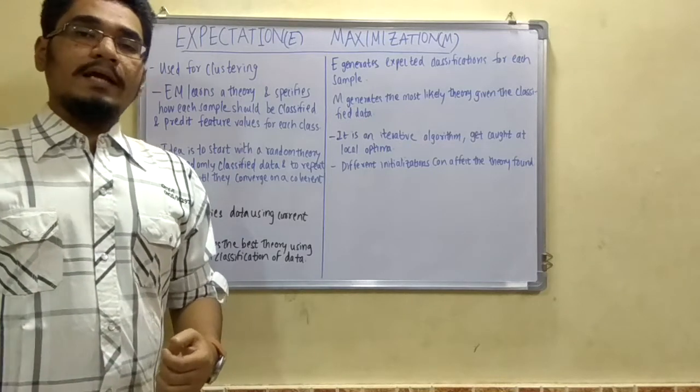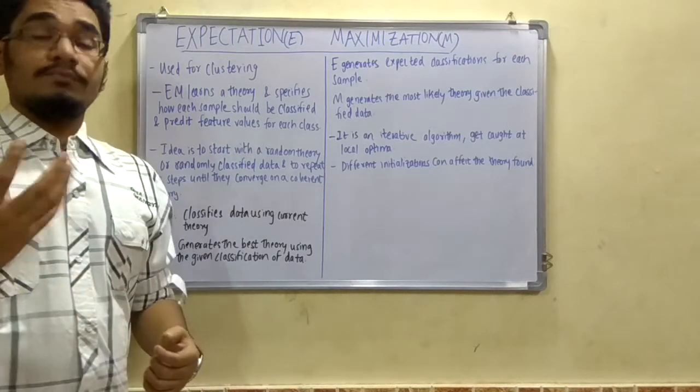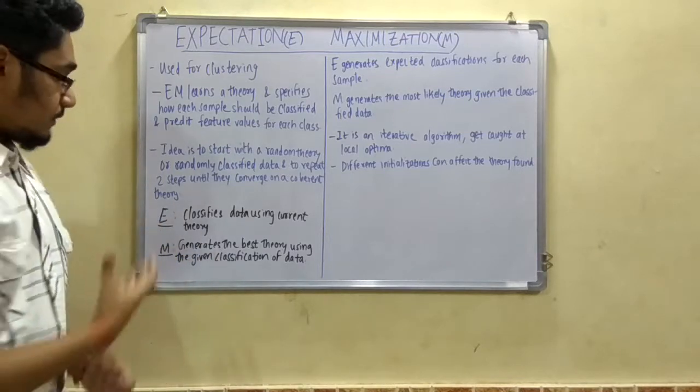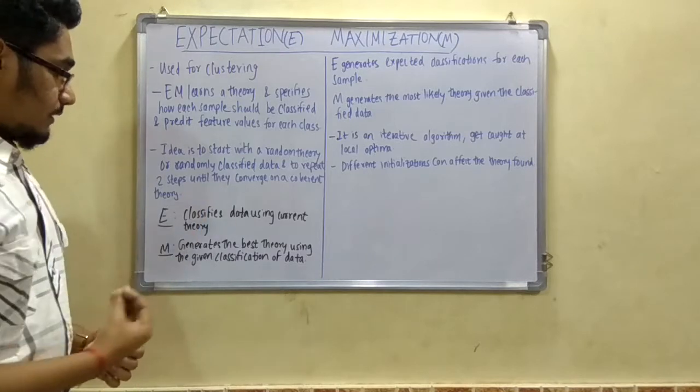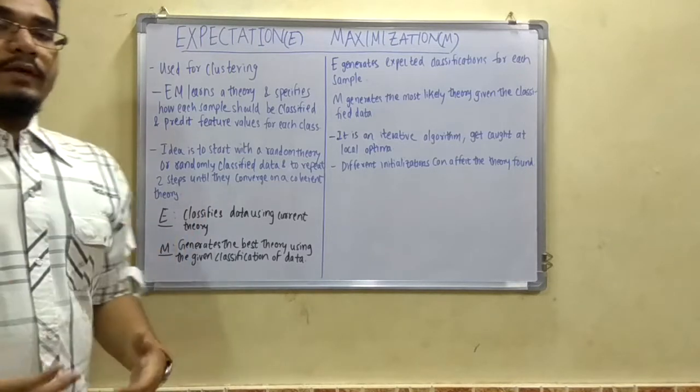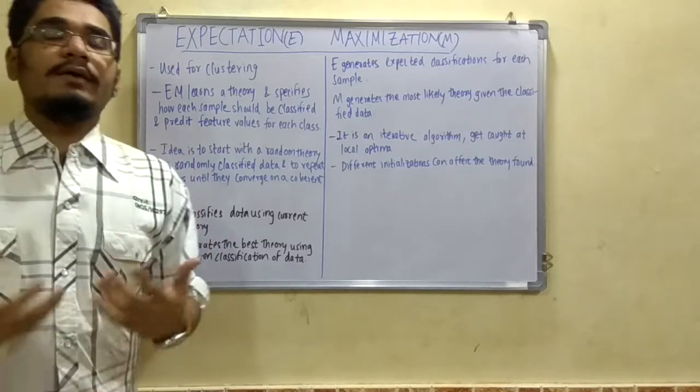Proposed theory is what we already prepare and keep that we have to utilize for solving this problem. Next is the maximization - that is M - it generates the best theory using the given classification of data.